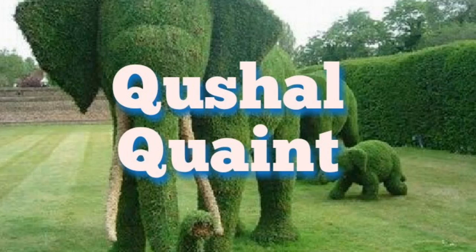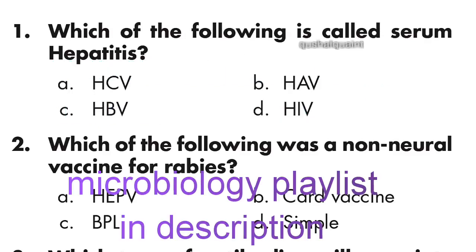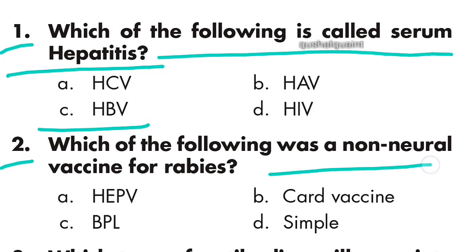Hello friends, in this video we are discussing 45 immunology MCQs in microbiology. You can also watch other videos with the microbiology playlist link in the description. If you found this video helpful, please like and subscribe. Question 1: Which of the following is called serum hepatitis? The answer is HBV, option C.